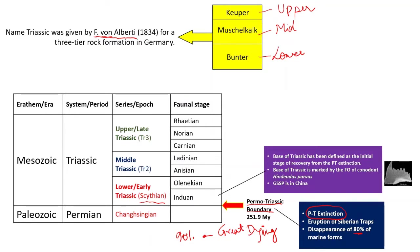The base of the Triassic has been defined as the initial stage of recovery from the PT extinction. Once the great dying occurred and the majority of forms disappeared from Earth, the Triassic marks the time period when life again started to emerge — the forms started to appear and take shape. This is why it is called the middle life. It was the initial stage of recovery from the PT extinction.